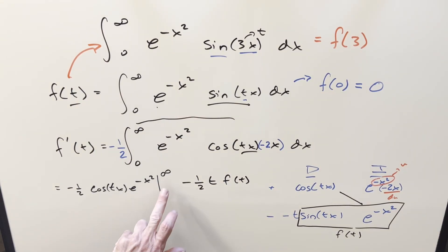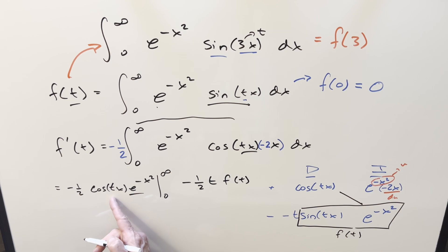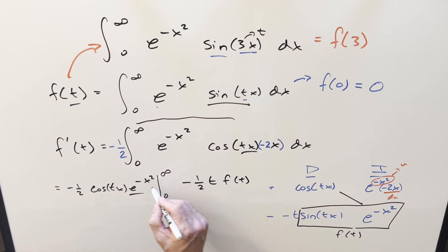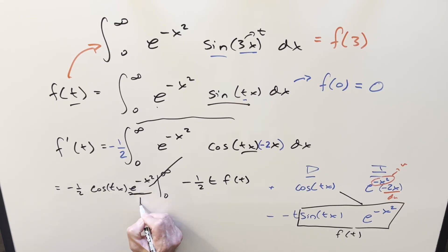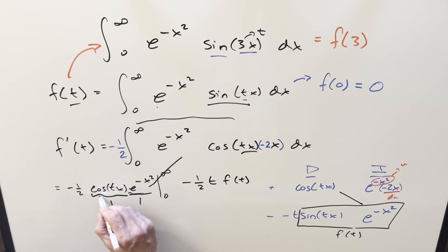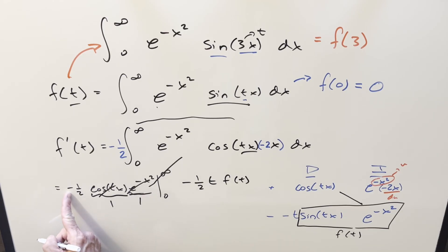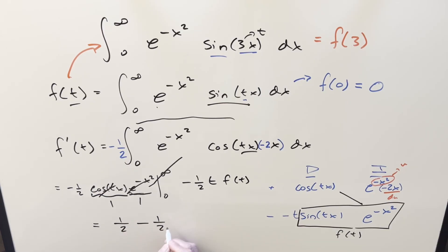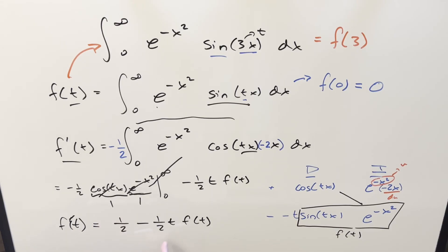Evaluating the boundary term: at infinity the exponential dominates and sends it to 0; at 0, cosine of 0 is 1 and e to the 0 is 1, so we get a contribution of 1. Collecting everything, f'(t) equals one-half minus one-half t times f(t). This is actually a differential equation — and it's linear.